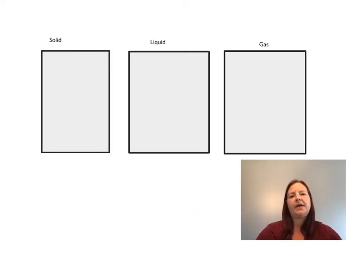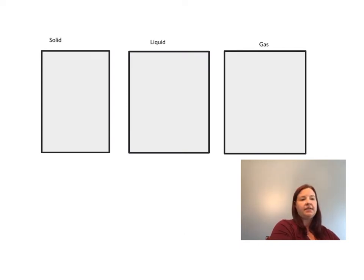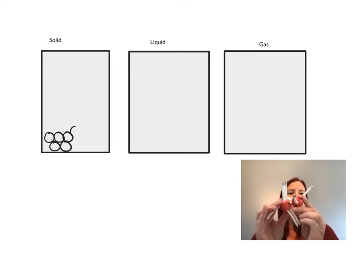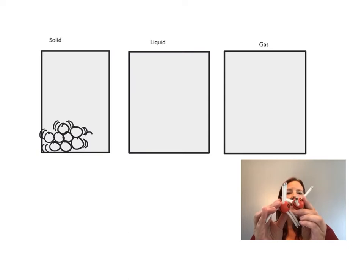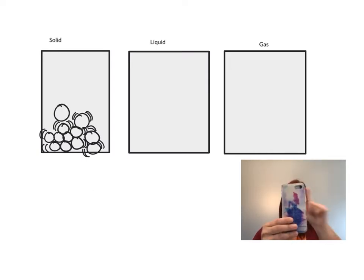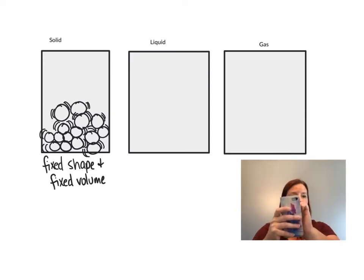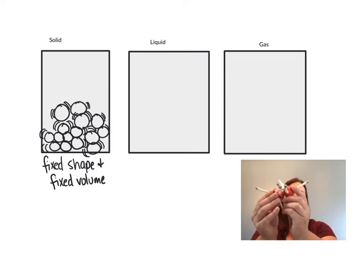One way we can classify matter is by its state. The first example is solids. In the solid state, atoms and molecules are going to be very close together and they just vibrate right in their location. In a solid, they have a fixed shape and a fixed volume — my phone here is going to keep this shape, and if I were to calculate its volume, it has a set volume. Even if I were to crunch it up, it's still going to take up that same amount of space.